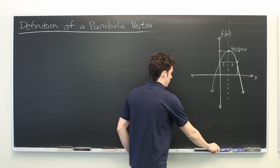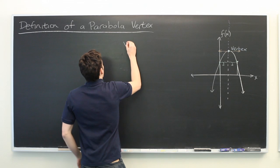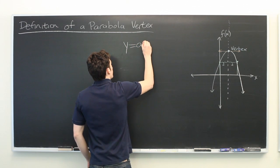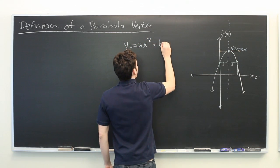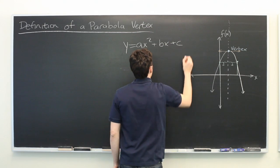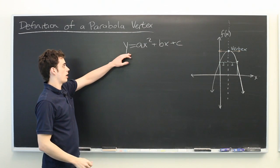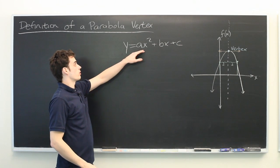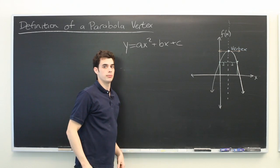With that in mind, we can find a very easy way to determine the x coordinate of the vertex. We start by assuming that a vertex is written in the form y equals ax squared plus bx plus c, which it often is.